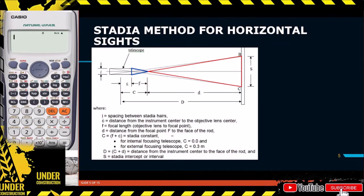This concept applies to the instrument as well. Note that there are two kinds of telescopes: the internal focusing telescope and the external focusing telescope. For the internal focusing telescope, the value of c is equal to zero, because the focus is internal. For the external focusing telescope, there is a value for both f and c, so c is equal to 0.3.